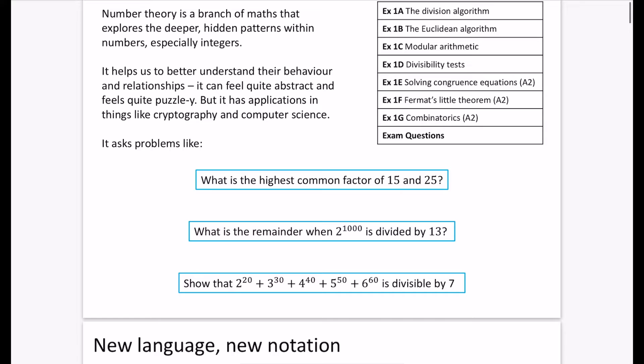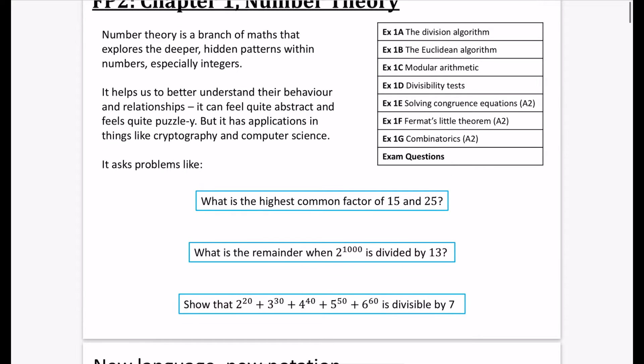And again, for a similar thing here showing that 2^20 + 3^30 + 4^40 + 5^50 + 6^60 is divisible by 7. And we're not going to do this by actually working this calculation out, because it would be huge and incredibly time consuming, and it wouldn't even fit on the screen of a calculator. So number theory is about, can we show these things? Can we prove these things without actually having to calculate some of these parts that we have here?